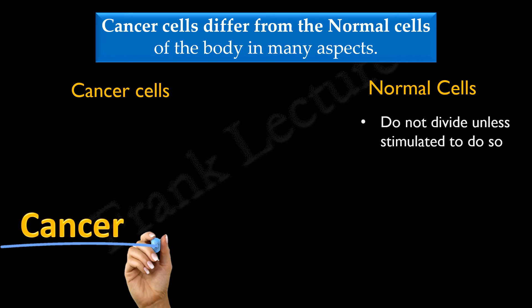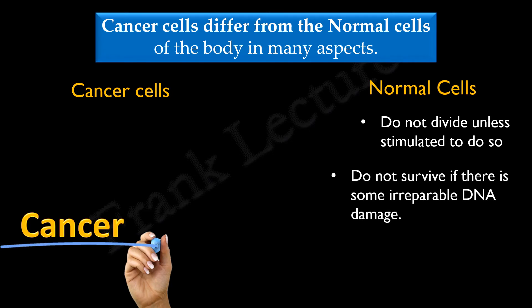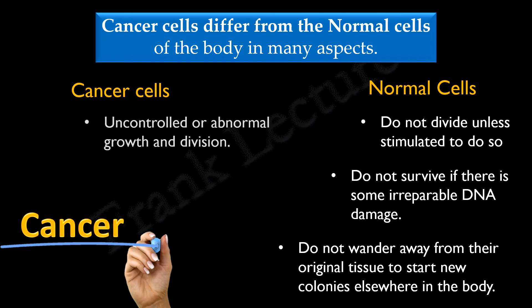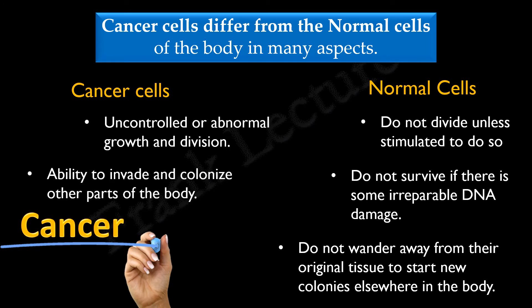For example, normal cells do not divide unless they are stimulated to do so. They also do not survive if there is some irreparable DNA damage. Normal cells do not wander away from their original tissue to start new colonies elsewhere in the body. All this is because our body has regulatory mechanisms to check and govern the cell's function. But cancer cells break down all these regulatory mechanisms, meaning the regulatory mechanisms fail to control cellular function such as growth and proliferation. Cancer cells are characterized by uncontrolled or abnormal growth and division. In addition, they have the ability to invade surrounding tissues and colonize other parts of the body, which makes them dangerous.